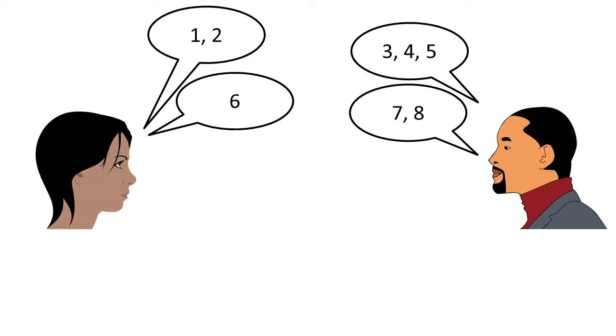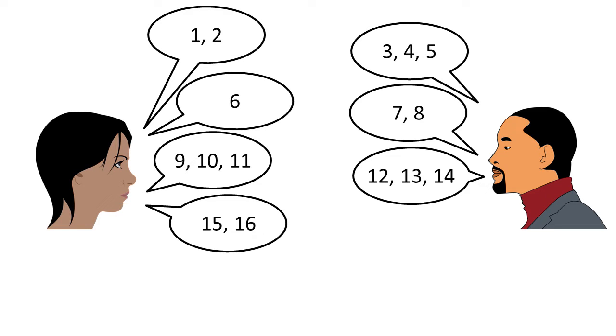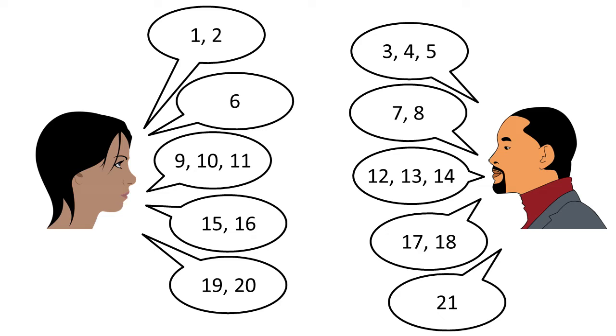Player two says seven, eight. Player one says nine, ten, eleven. Player two says twelve, thirteen, fourteen. Player one says fifteen, sixteen. Then seventeen, eighteen. Then nineteen, twenty. Player two now has no choice other than to say twenty one, which means he loses the game and player one is the winner.